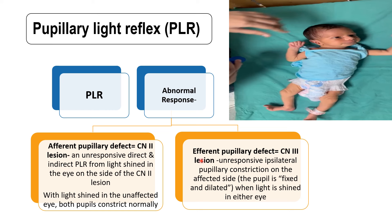When an efferent pupillary defect is present due to a lesion in the third cranial nerve, there is unresponsive ipsilateral pupillary constriction on the affected side when the light is shined in either eye. So if the left third cranial nerve is damaged, then in the left eye there will be no direct and no indirect pupillary response. Absent pupillary light reflex on the affected side is present in third cranial nerve lesions.